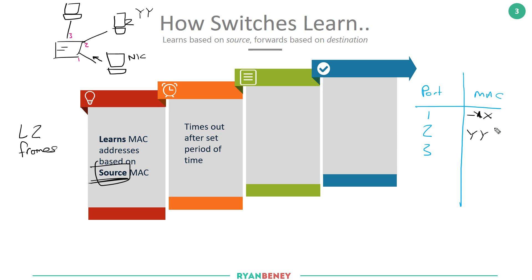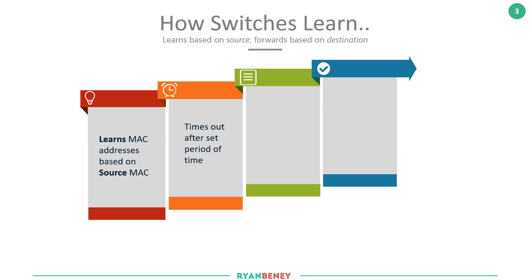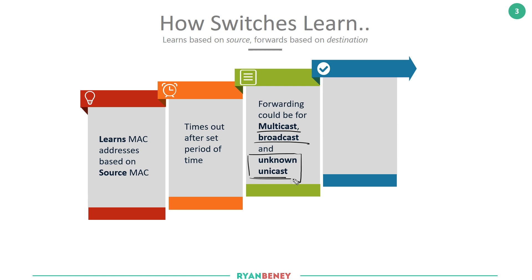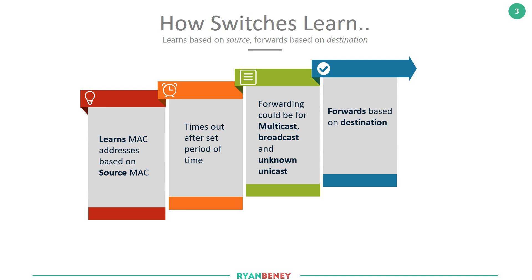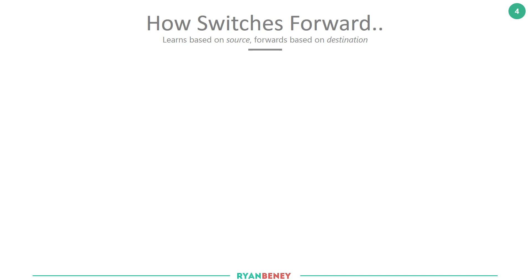Otherwise you're left with a stale entry where a switch thinks a device is reachable out of one port when it's actually reachable out of a different port. When the switch goes to forward the frame, the frame could be a multicast, a broadcast, a unicast, or something called an unknown unicast. Understanding which type matters because ultimately the forwarding decision is based on the destination — whether it's multicast, broadcast, or unicast affects what the switch does with that frame when it's received.